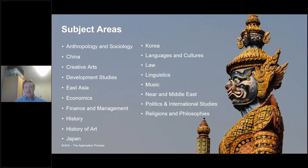If you are attending this webinar today, I'd imagine you might be slightly familiar with us already and have done a bit of research. But if you're still in that research phase and looking to decide which subject you want to study, I'd really recommend having a look at our website. You can find each of the subject areas and then the specific degrees available within those. With all of our single and joint honours programmes combined, I think there's over 250 different options at undergraduate level.